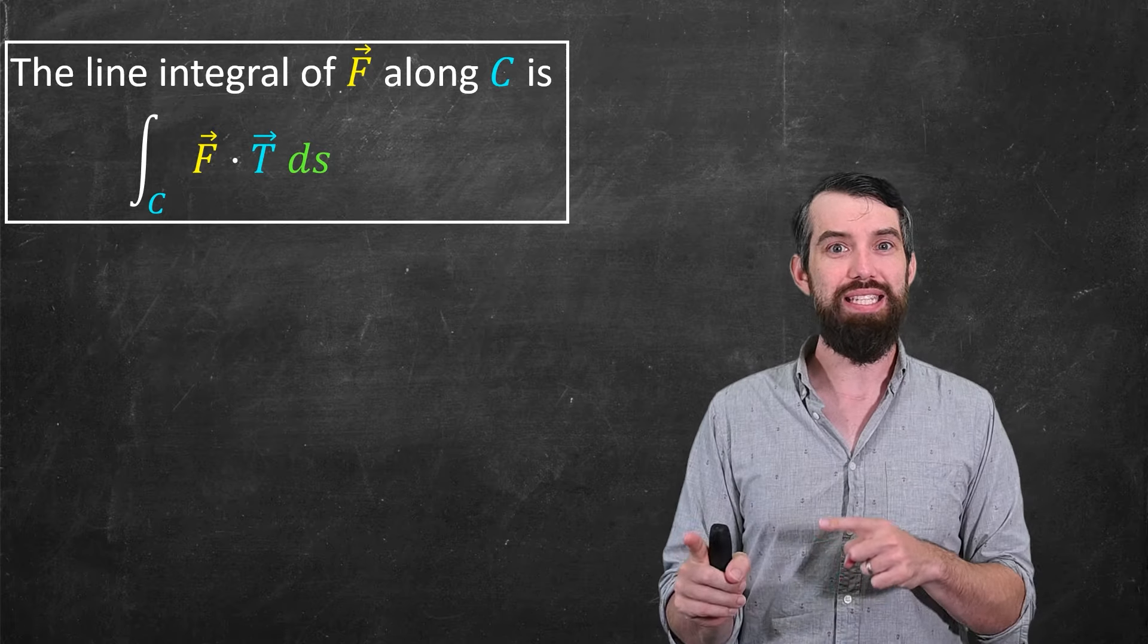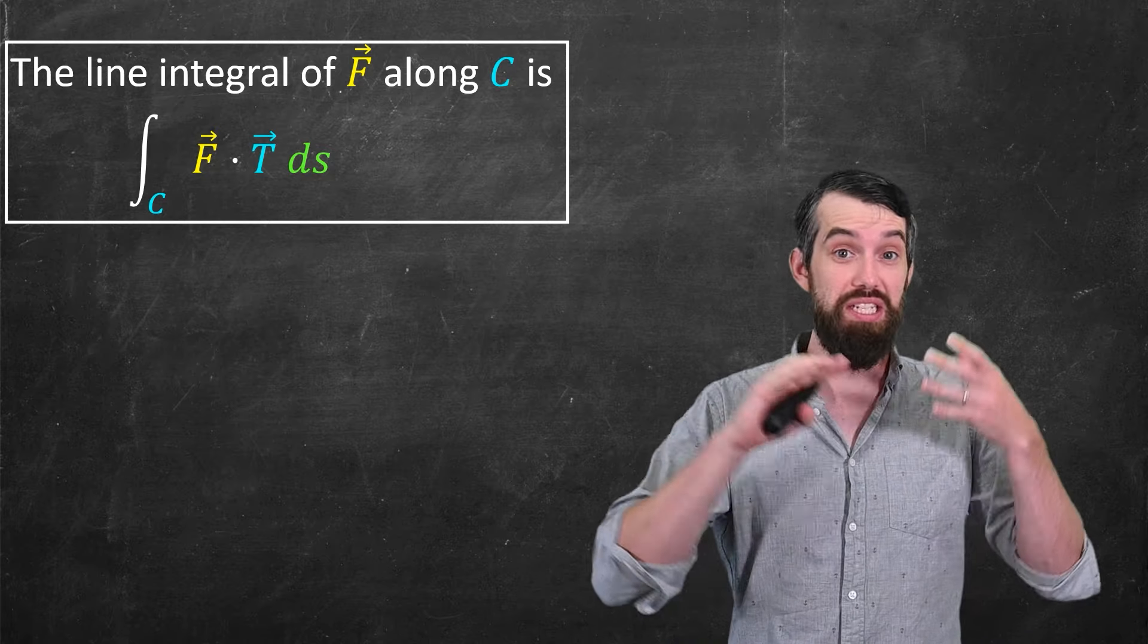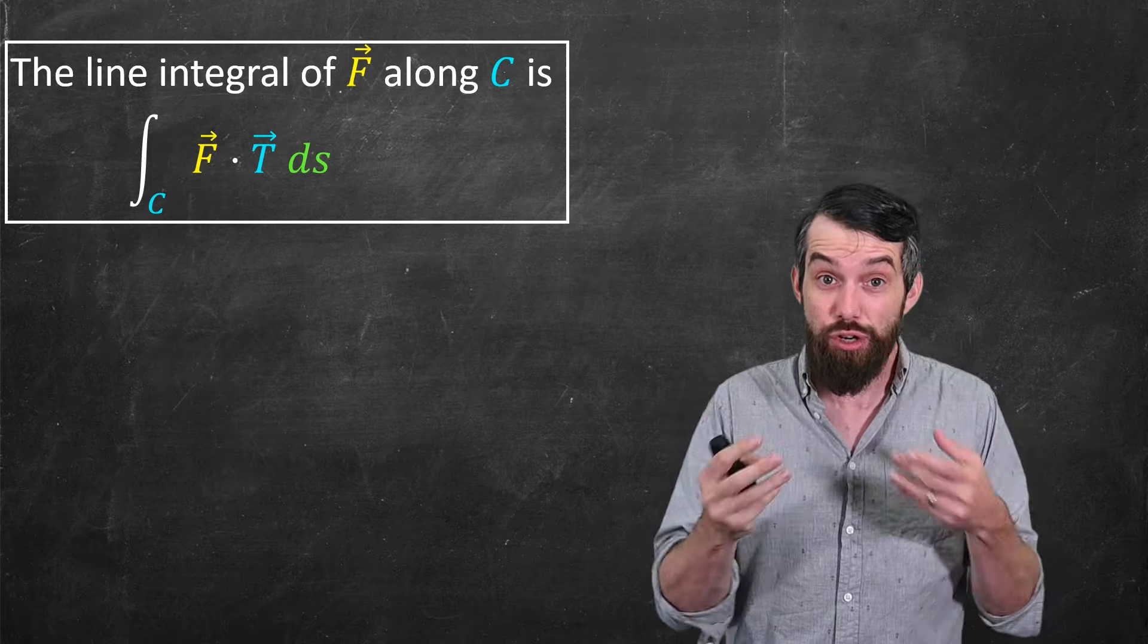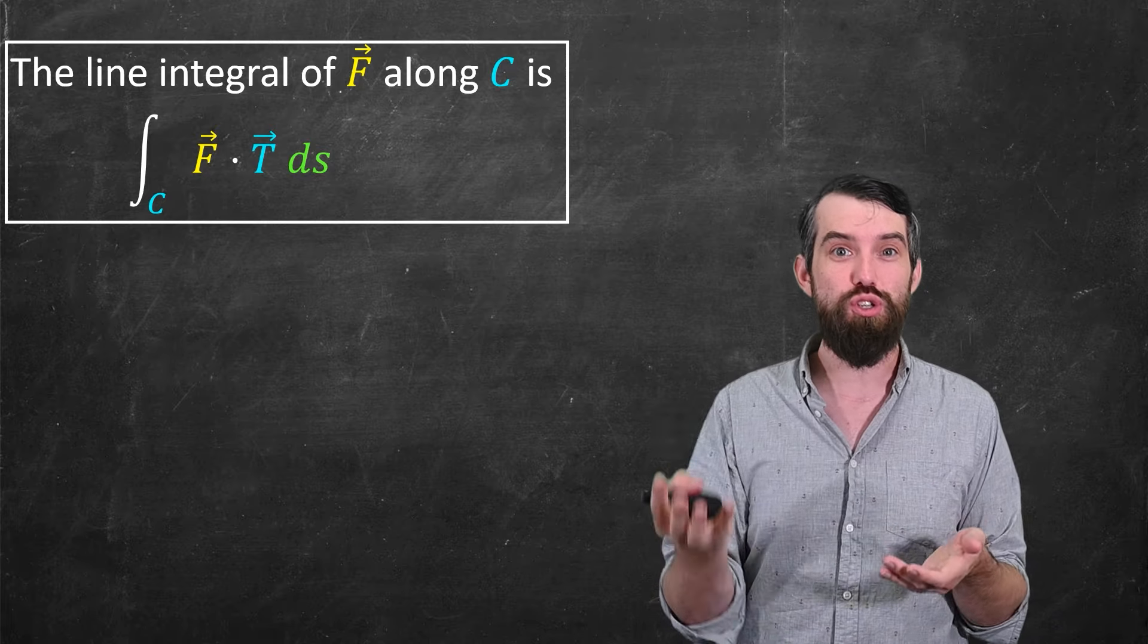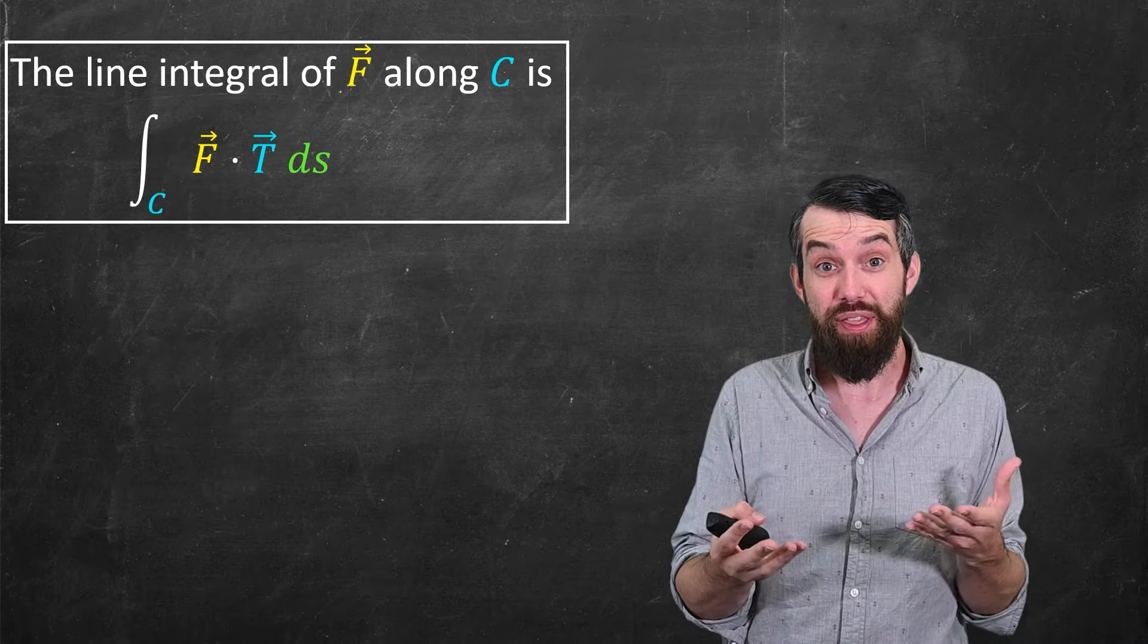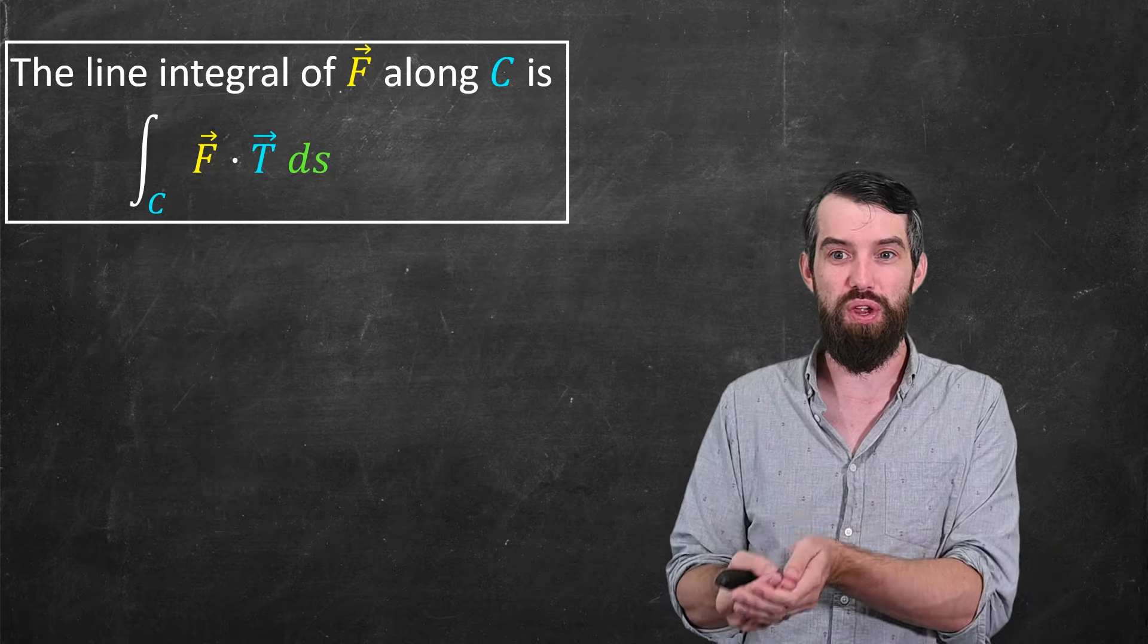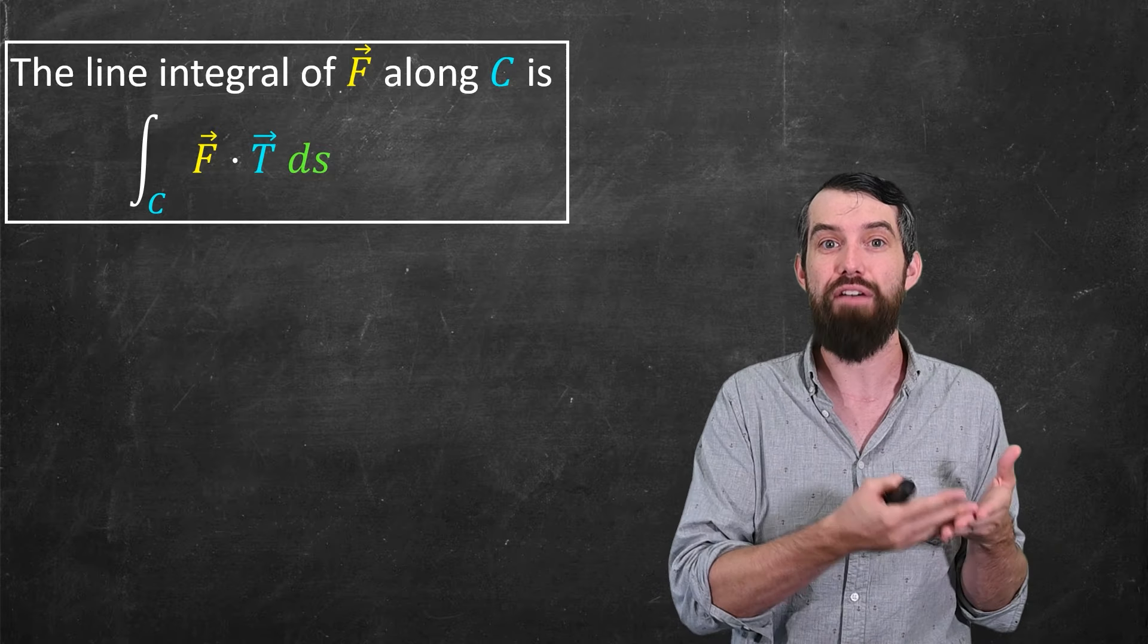So this formula is exactly like the line integral formula we've seen before, indeed is defined in the exact same way, it's just the integrand is different. The integrand is not just an arbitrary function, which is what we've seen before, the integrand is the specific thing, it's trying to capture the influence of the field along the curve, and so the integrand is this f dot t.